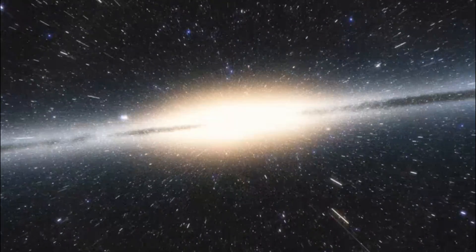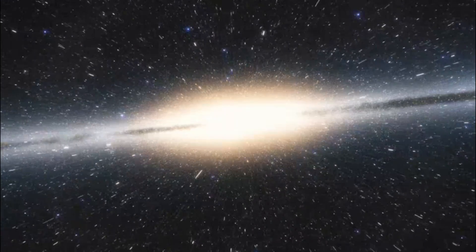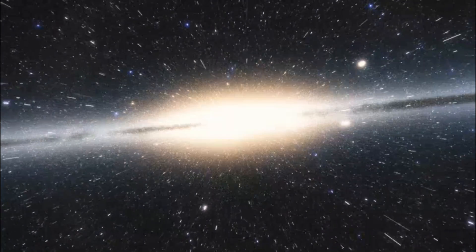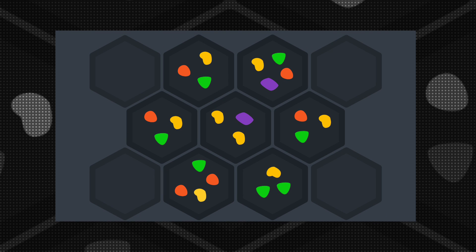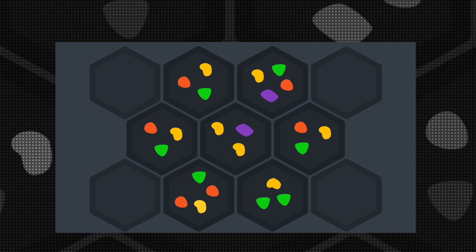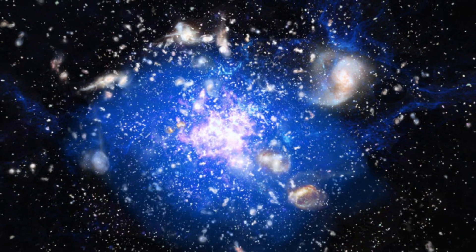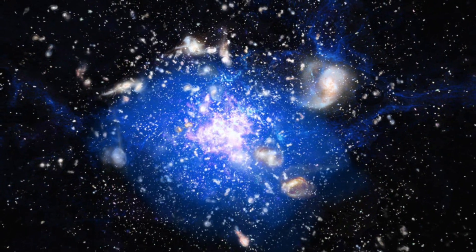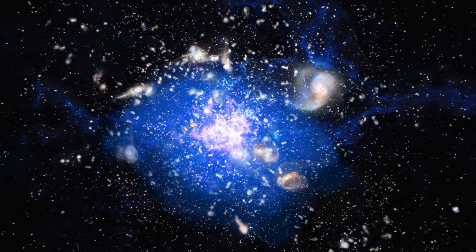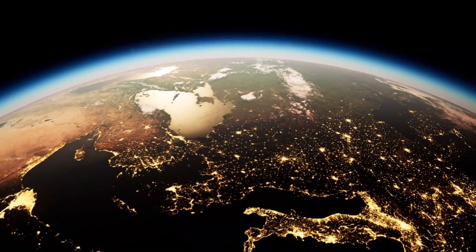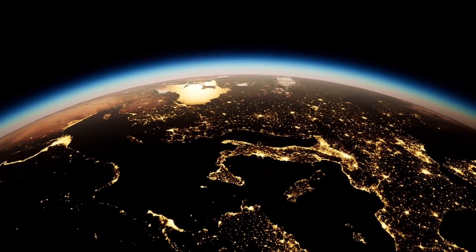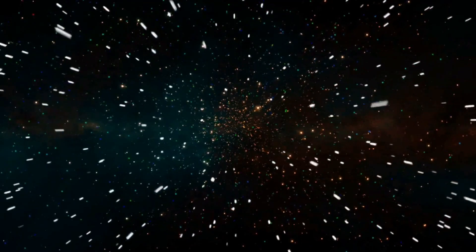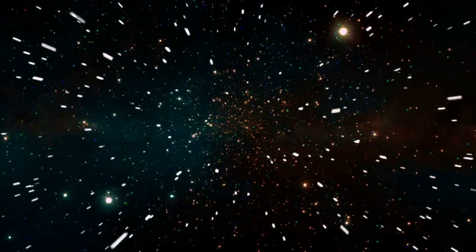This galaxy's properties indicate that it is a protocluster, which is a system of galaxies that is just beginning to merge. Protoclusters are thought to be the building blocks of larger clusters, which are the most massive structures in the universe. This galaxy appears to have a significant amount of neutral hydrogen gas, which is required for star formation. The presence of so much neutral hydrogen gas in the early universe suggests that this galaxy may have played an important role in the formation of stars and galaxies.